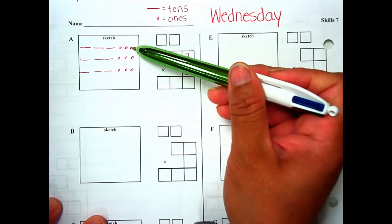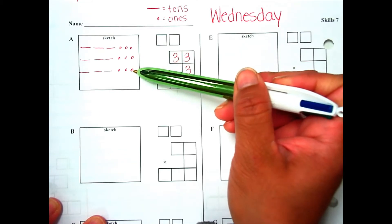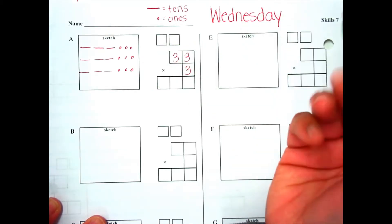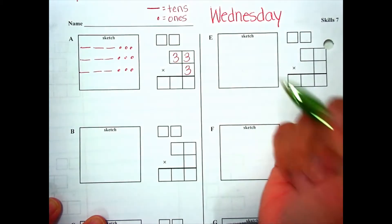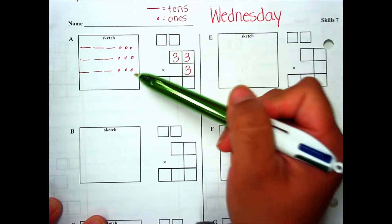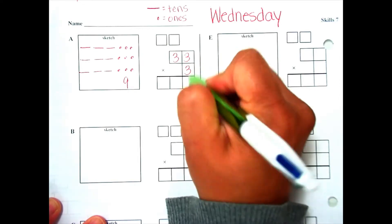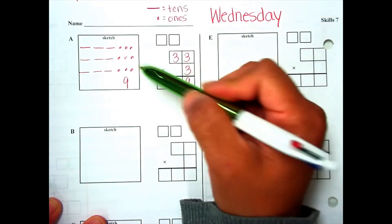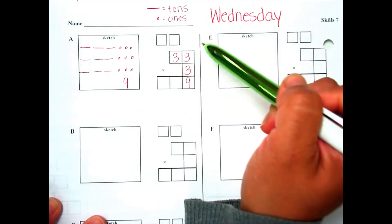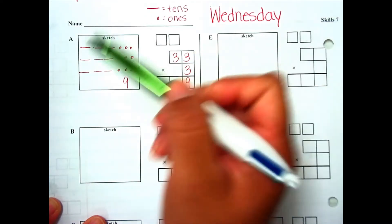How many ones do we have in each row? We have three in each row, so we have 3, 6, 9 ones in all. We have nine ones. Is that enough to regroup? No. So right here I'm going to write a nine in our ones place, because 3 times 3 is 9.